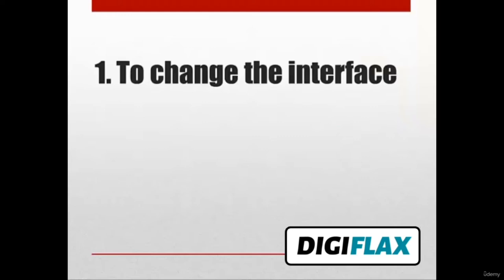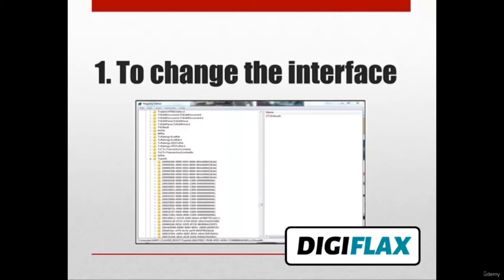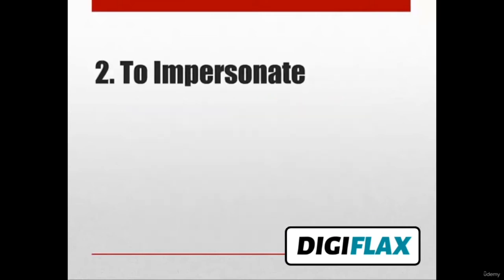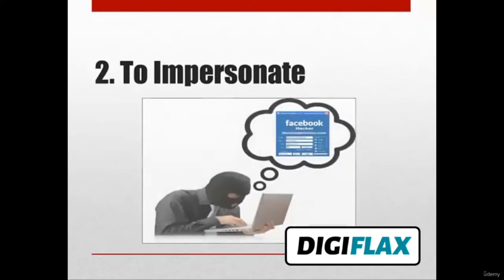First is to change the interface. A system is given a user interface using which you can interact with it. But if you don't like the interface or you want to change it, you can hack into the system. For example, in Windows operating systems, you can hack and change some of the default settings like the startup screen, themes, colors of menus, and everything. You can do it by registry editor. Second is to impersonate. We are in an information age where social media is growing so quickly, and people will try to pretend to be someone else, hacking accounts — Facebook, Twitter, Gmail, or anything.